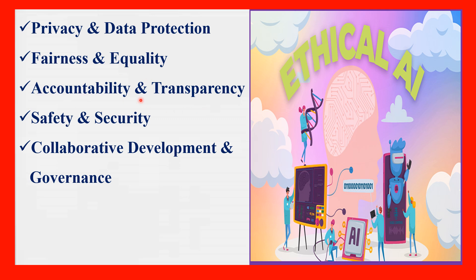Accountability and transparency involves providing explanations, documentation, audits, and feedback mechanisms that enable stakeholders to understand how AI works and why it makes certain predictions. Safety and security means minimizing risks, errors, failures, or misuses arising from software bugs, hardware faults, environmental hazards, hacker attacks, or malicious actors. Collaborative development and governance encourages multi-stakeholder dialogue, collaboration, and co-creation between researchers, developers, policymakers, civil society organizations, and affected communities to build shared responsibility around AI's societal impacts.